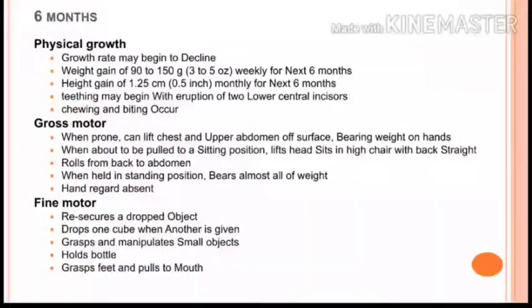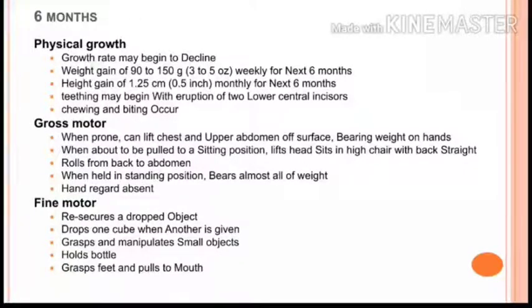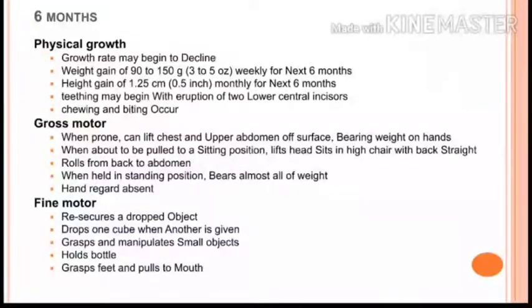Moving on to the six-month-old child: in physical growth, the growth rate may begin to decline. Weight gain is 90 to 150 grams per week for the next six months, and height gain is 1.25 cm per month. Teething may begin with the eruption of two lower central incisors; chewing and biting also occur.